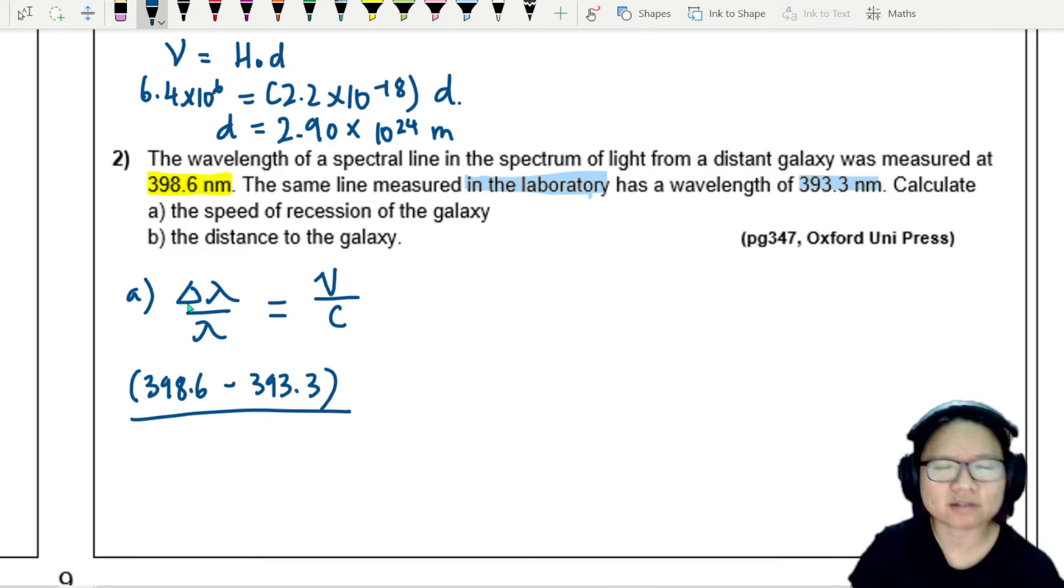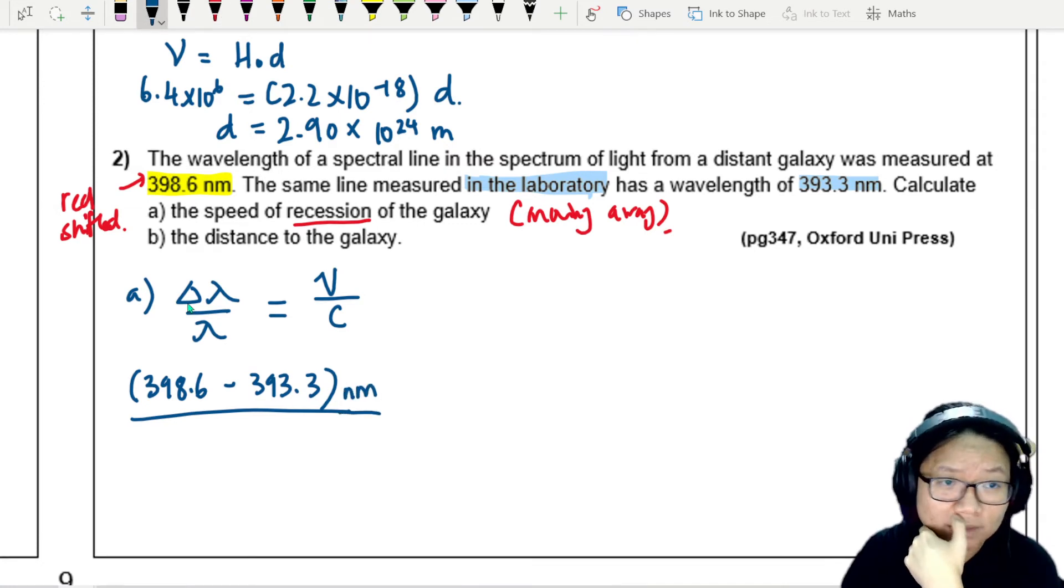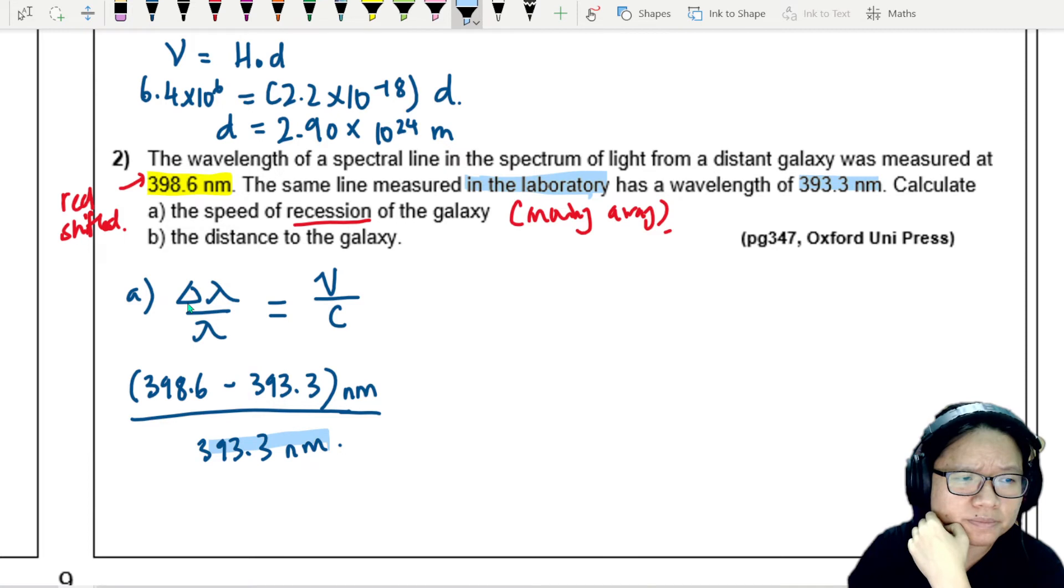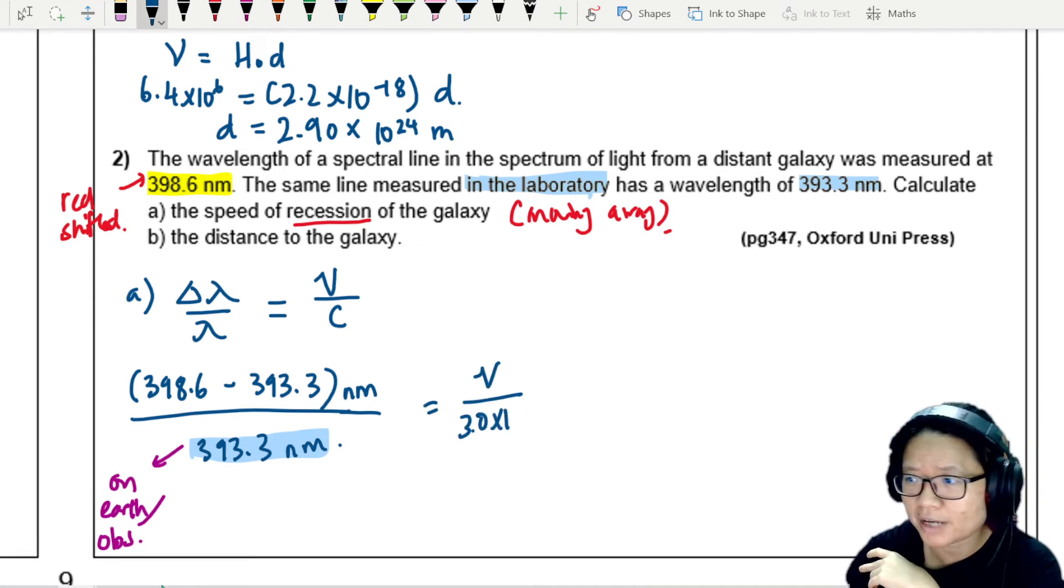Obviously you can tell in the lab, the wavelength is shorter. The longer one that is observed is red shifted, which makes sense. Recession of galaxy means moving away. I'm going to plug this in and divide by the original one in our lab, 393.3 nanometers. This one here always is the one on Earth. You measure at the location of the observer.